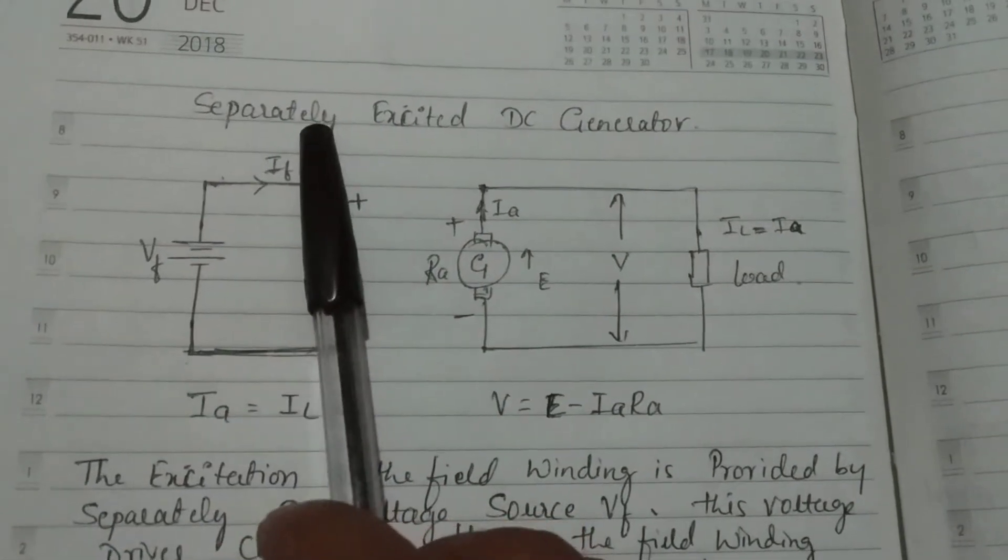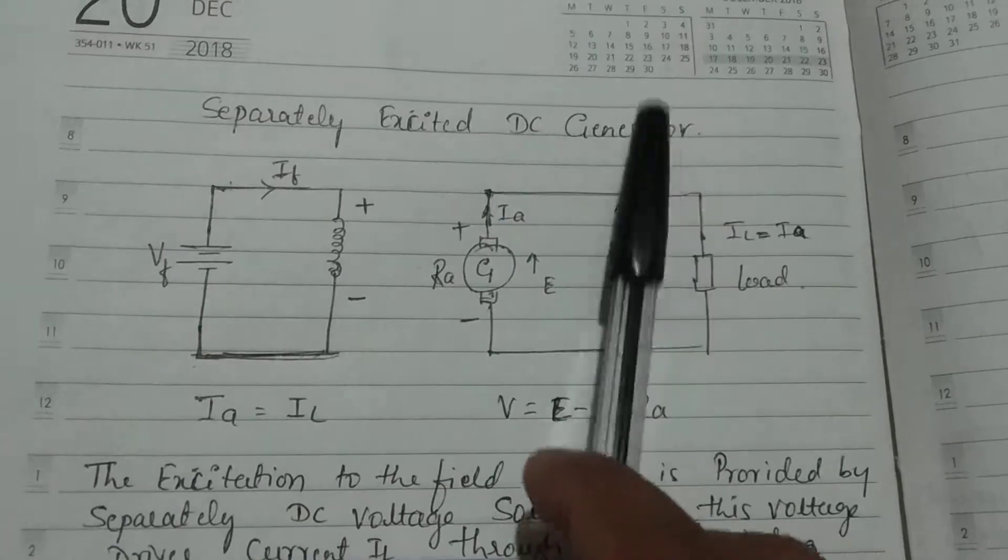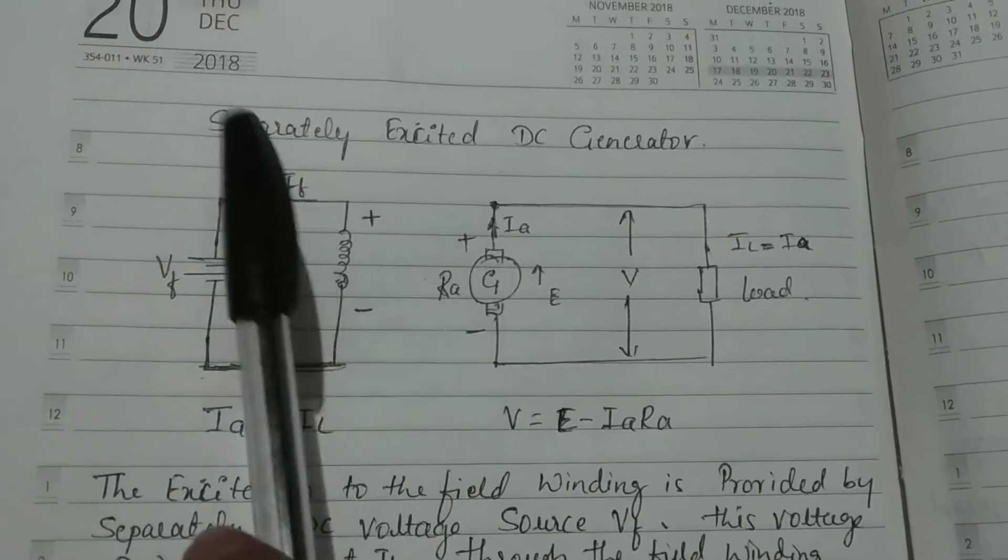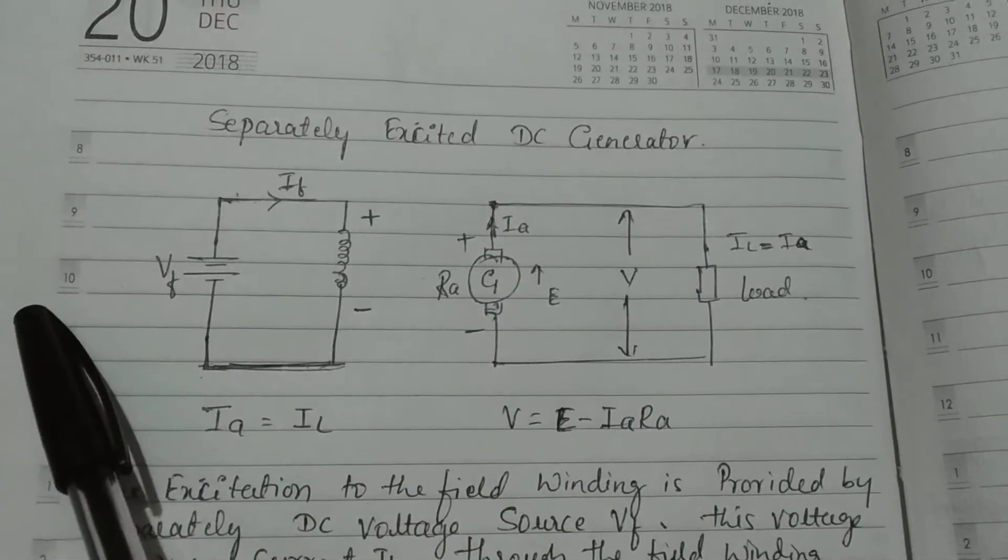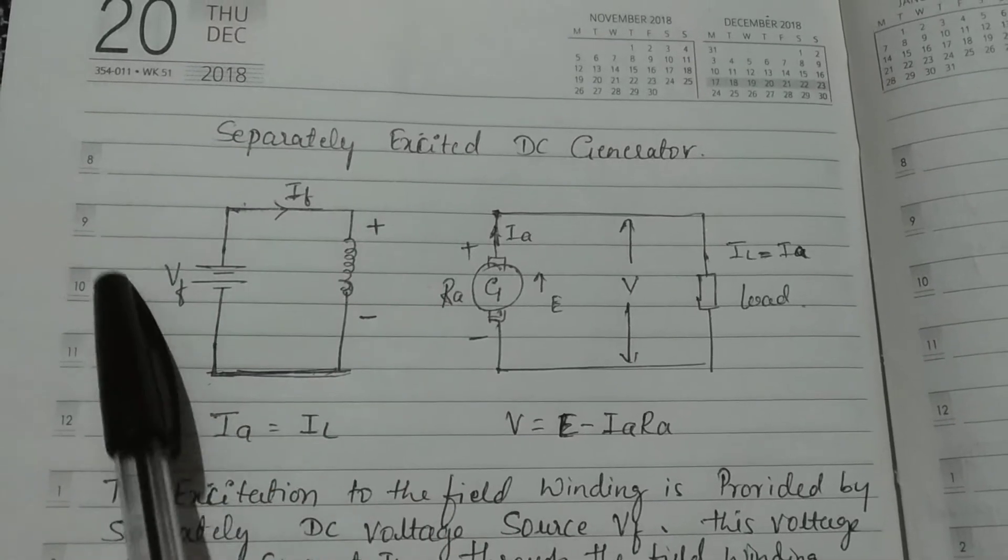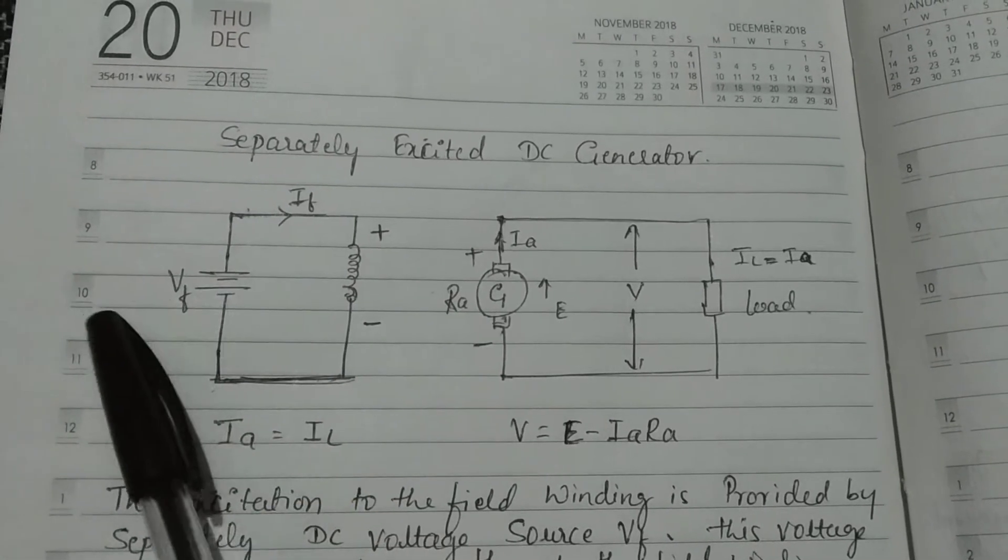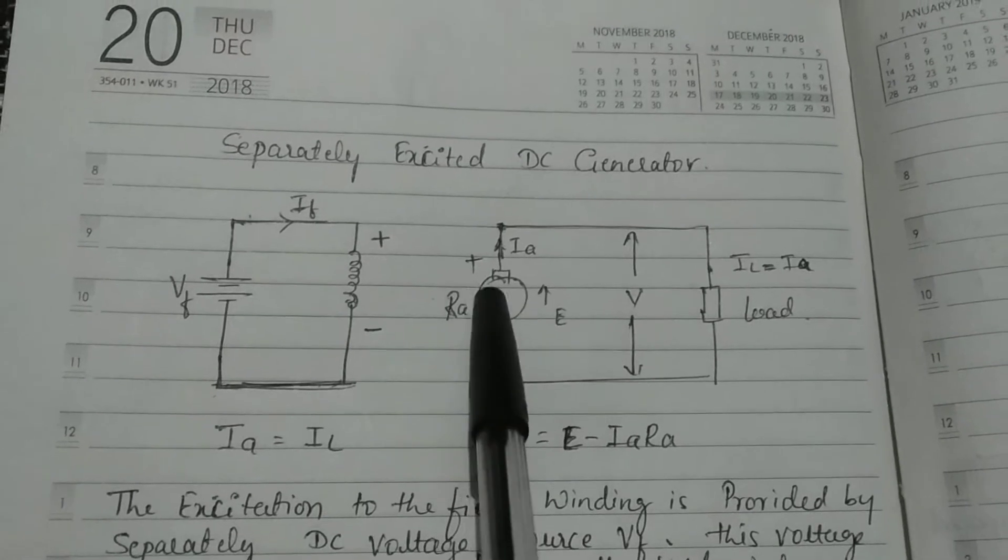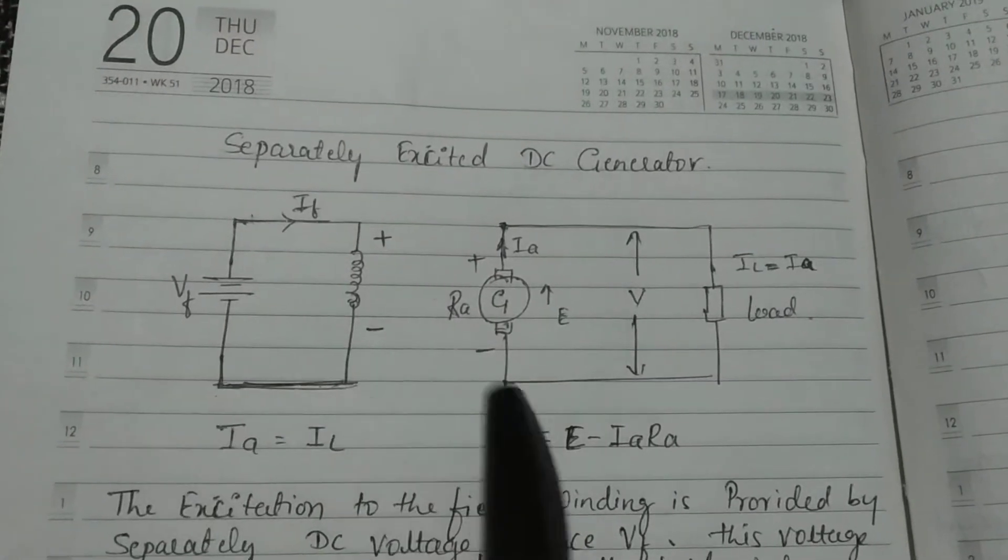Now we'll see the first type: the separately excited DC generator. Why is it called separately excited? You can see here we have one separate voltage supply for this generator.